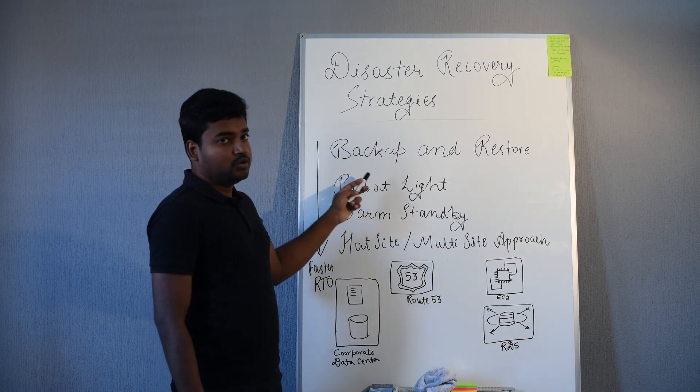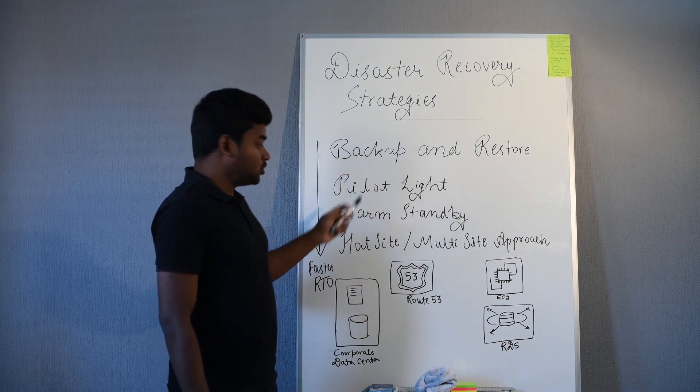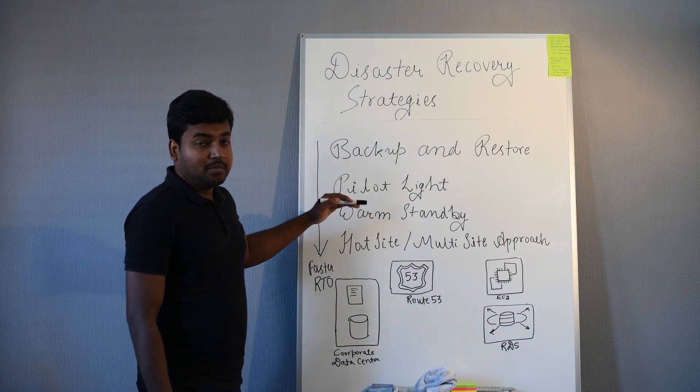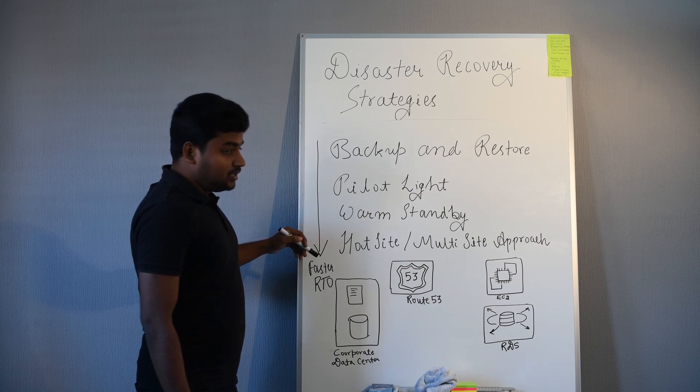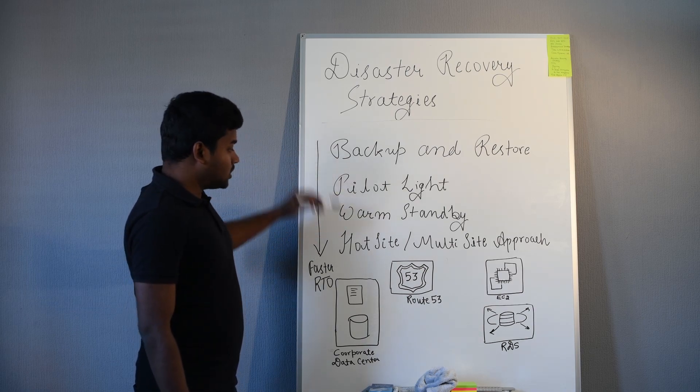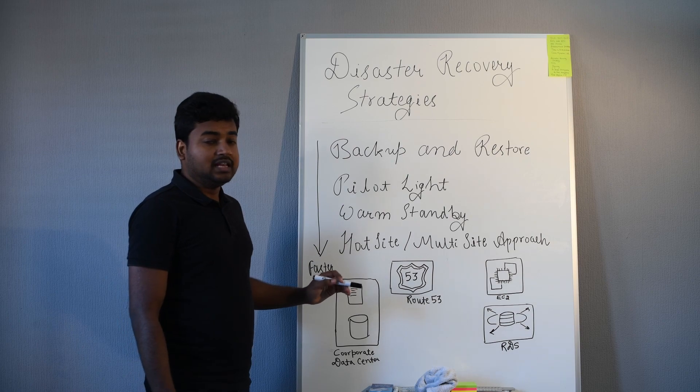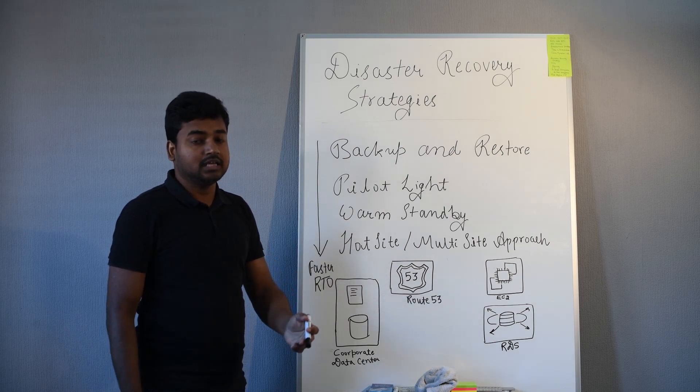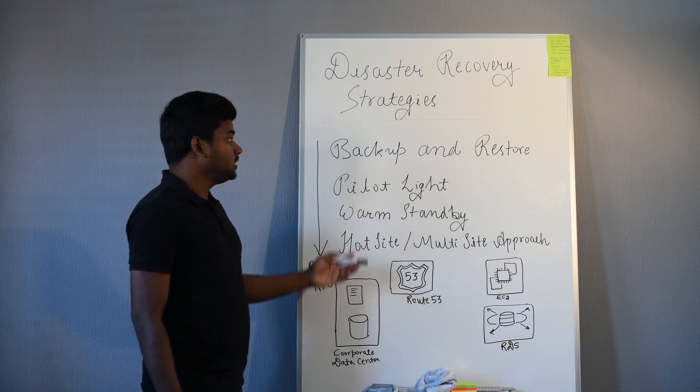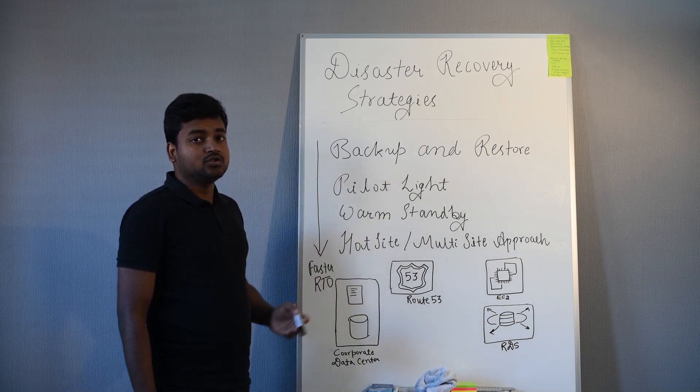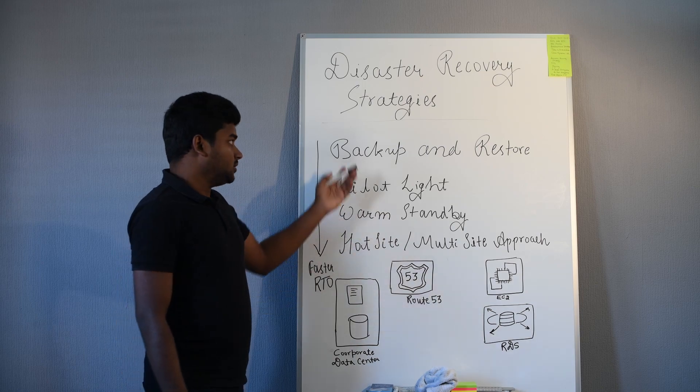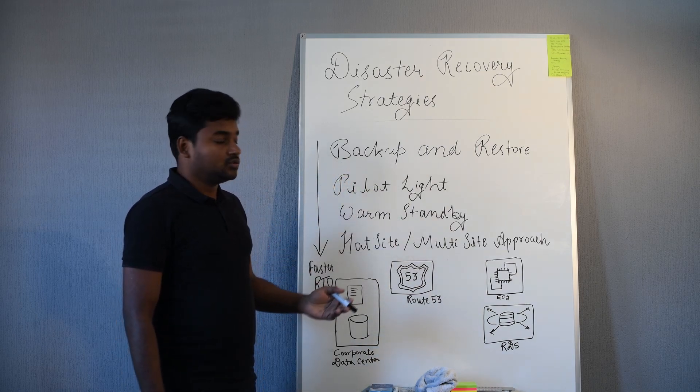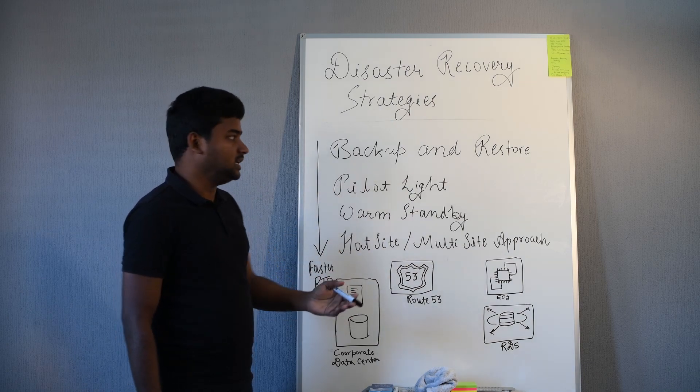It has the lowest RPO and the slowest RTO. I have written these four strategies based on the RTO sequence. The bottom one has the fastest RTO, meaning it will take very less time to spin off everything and your application will be up and running in case of disaster. The top one is the slowest.